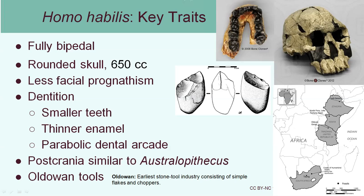Evidence of tool use is seen with Homo habilis — they were specifically using the Oldowan tools, which are relatively primitive stone tools, but they were using them extensively. They had a sharp blade used to help with butchering meat and scraping meat off bones. We also see less facial prognathism, the teeth are getting smaller, the enamel is getting thinner, and there's a parabolic dental arcade. However, their post-cranial skeleton is still similar to Australopithecus. Fossils have been found overlapping with the same geographical area as the Australopithecines — Eastern and Southern Africa.